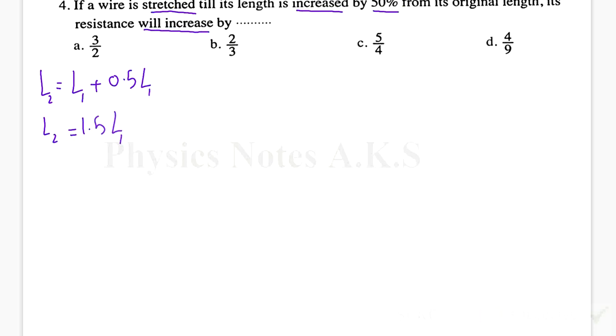We know that when the length increases, the cross-sectional area will decrease, but the volume will stay the same, so V2 equals V1. The volume, since the wire is a cylinder, is going to be A2 L2 equals A1 L1.